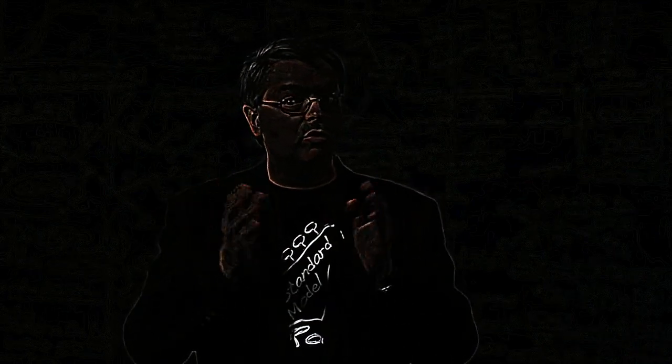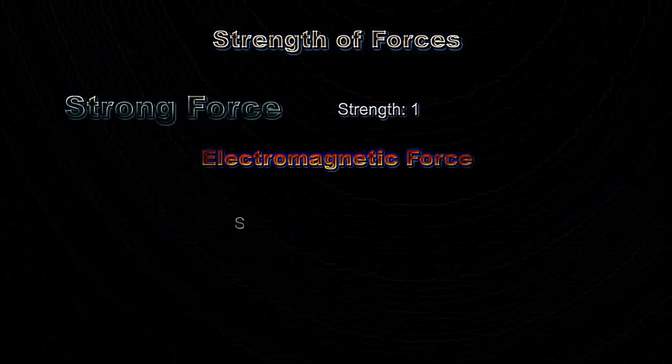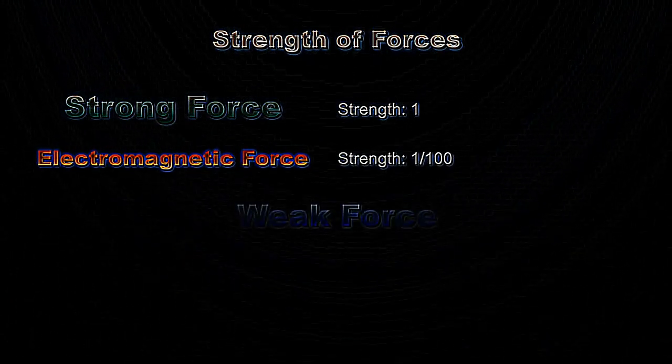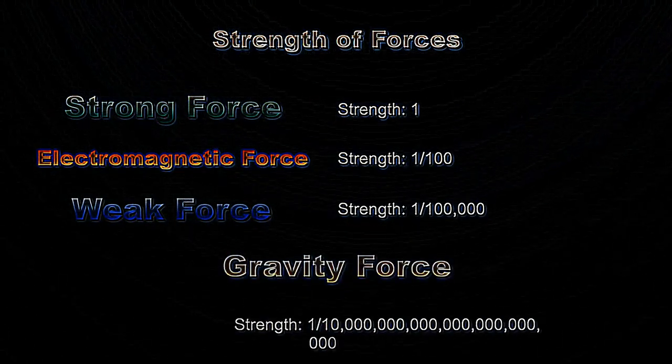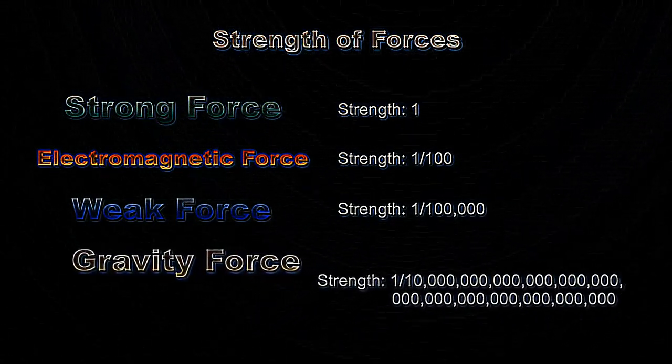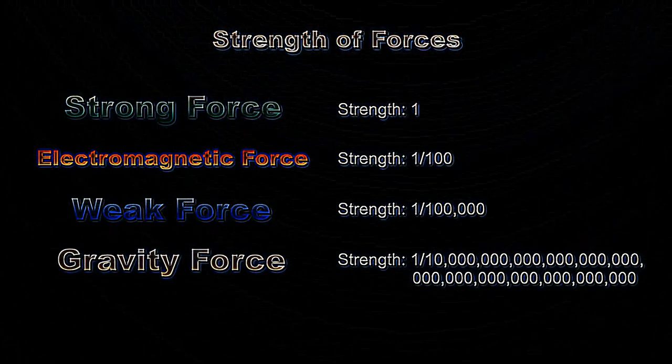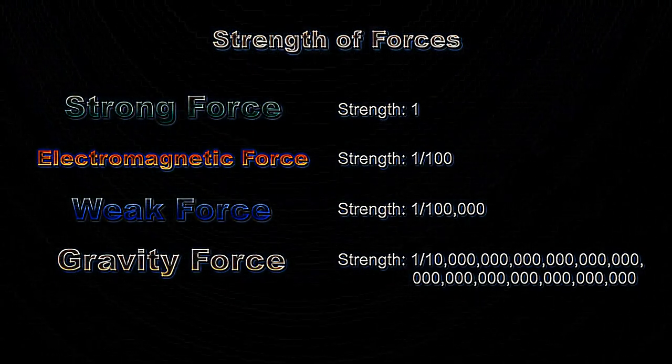The strength of the forces is really quite different. If we call the strength of the strong force to be one unit of strength, like one mile or one hour, then the strength of the electromagnetic force is about 100 times smaller. The strength of the weak force is about a hundred thousand times smaller. And the strength of the puny force of gravity between two particles is a one followed by 40 zeros smaller. This weakness of gravity is why we can't study it at particle accelerators, and it's a huge mystery. We don't understand why gravity is so much weaker than the other forces. Gravity is currently not part of the standard model.